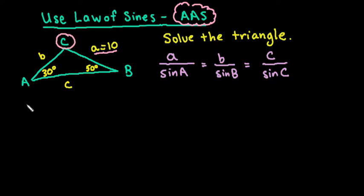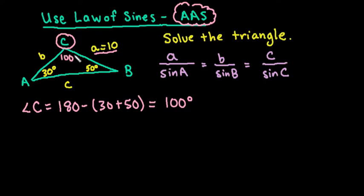To find angle C, we have to use the fact that all of the angles of a triangle add up to be 180 degrees. So 30 plus 50 plus angle C has to equal 180. So we can say that 180 minus the sum of 30 and 50 would give us angle C. So if we solved this, we would end up with 100 degrees. So that's the first thing that we have to find is angle C.